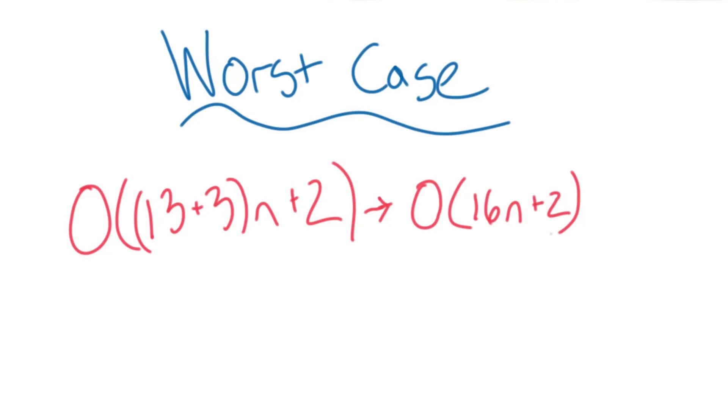If we're going to try and calculate the average case efficiency, it's going to look a little more like this. In the end, we'll get 16n plus 2.